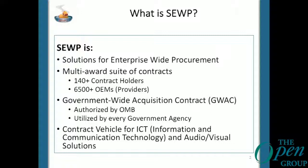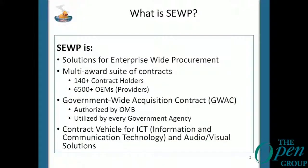We also have about 6,500 OEMs, or what we call providers — either OEM of an in-scope product or a provider of an in-scope service. We are a Government-Wide Acquisition Contract, or GWAC, open to the entire U.S. federal government. We're used by pretty much every federal agency. In FY18, we were used by 87 separate federal agencies. Our scope is extremely broad — everything from handheld devices up to supercomputers, AV equipment, networking equipment, software, and pretty much anything else you can shoehorn into the IT realm.